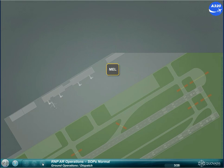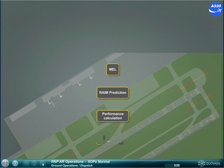The four items to check are: Minimum Equipment List, RAIM Prediction, Performance Calculation, and Weather Conditions.